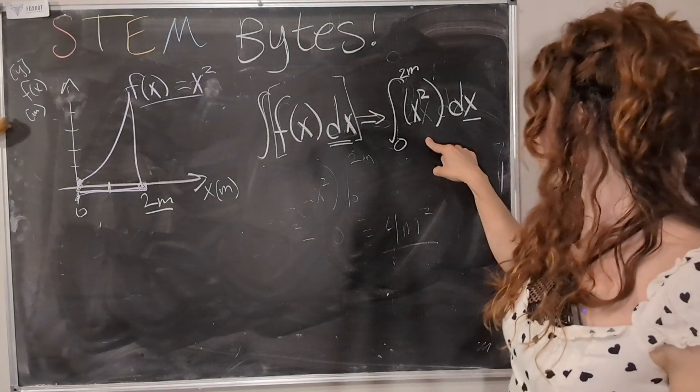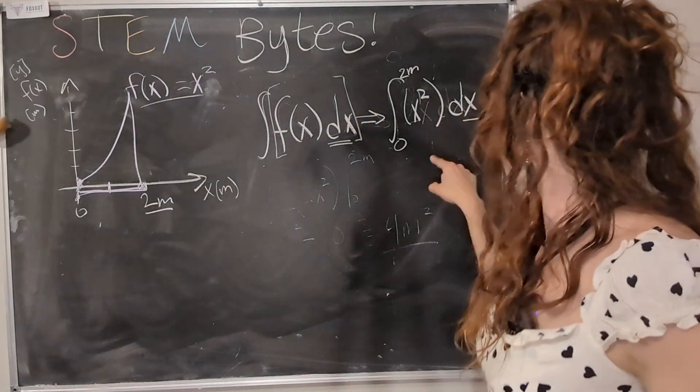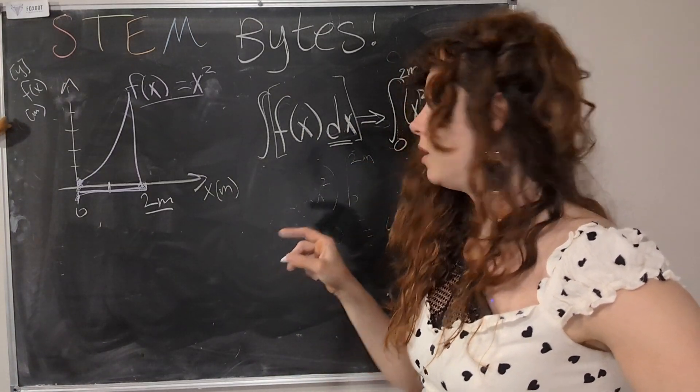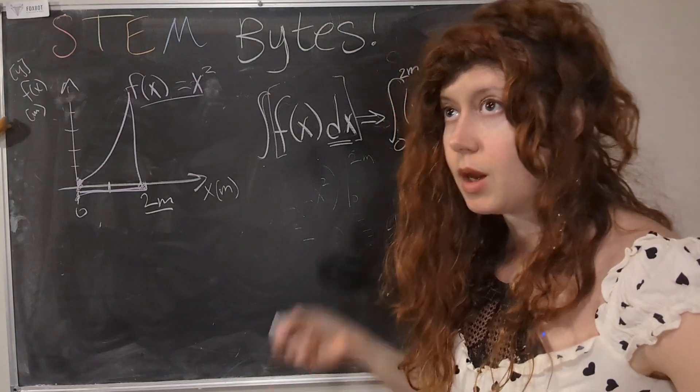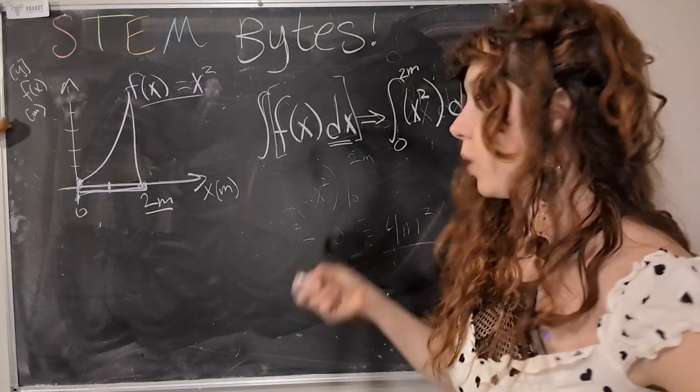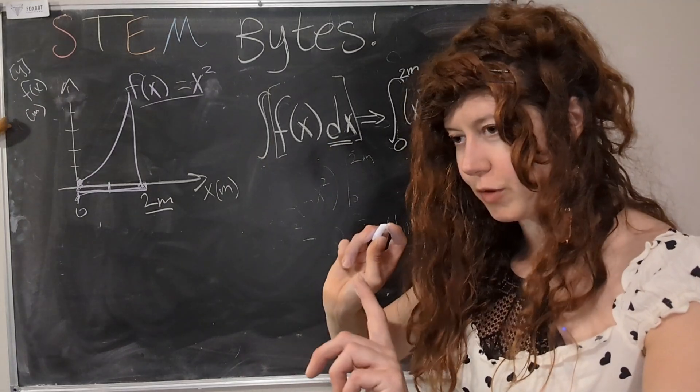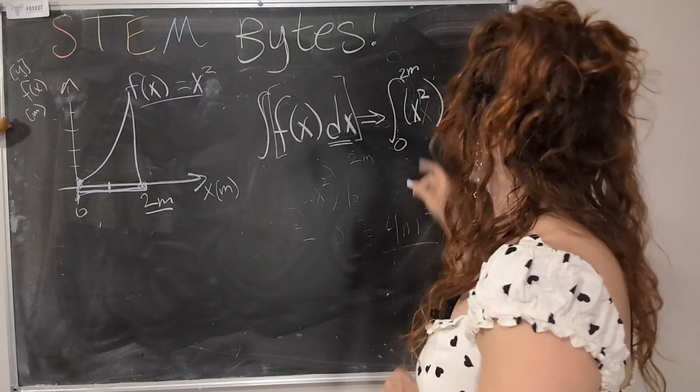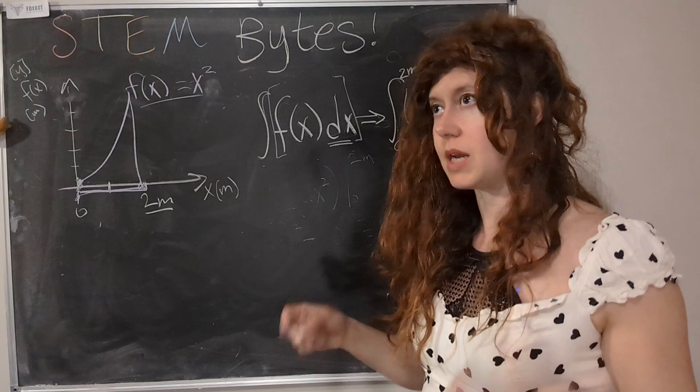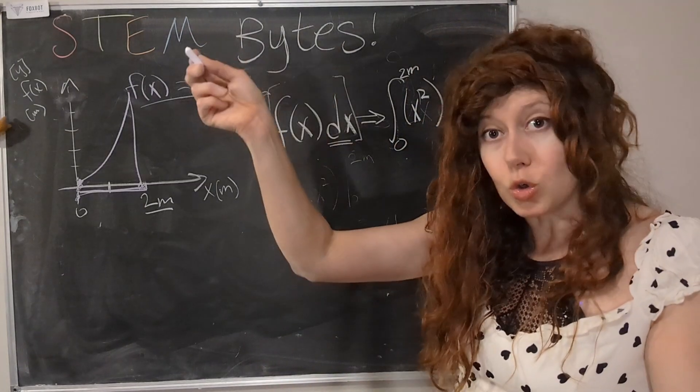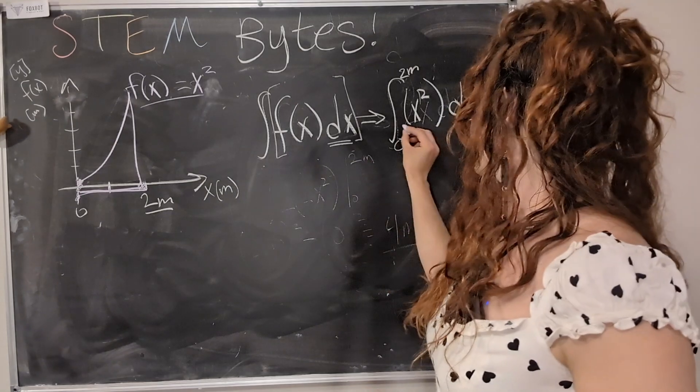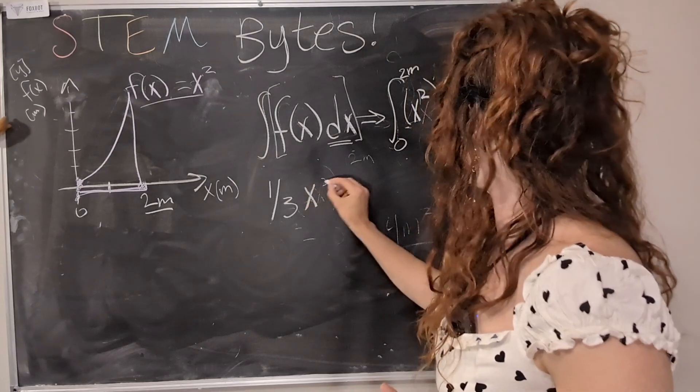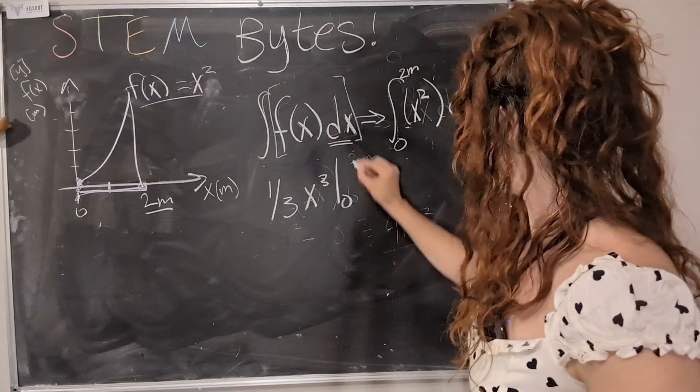Okay. So now we take the integral of x squared dx. And again, we are going backwards. So you think in your head, you're like, if I were to take the derivative of a function, what would it look like to give me x squared? So you're kind of like, you're flip it and reverse it. It's a little bit funky at first, but the more you practice it, the easier it gets. So like when I see x squared, I'm like, oh, if I were to take the derivative of a function x cubed, that would get me to x squared. However, I'm also missing a little number out front. So that would mean that I have to have a one third here, one third x cubed. And again, we're going to go from zero to two meters.